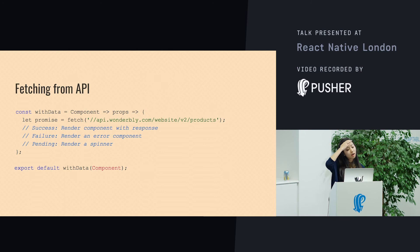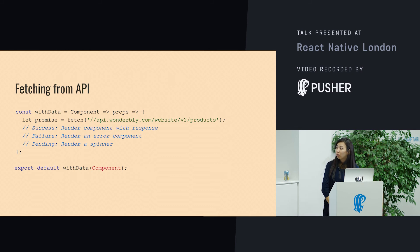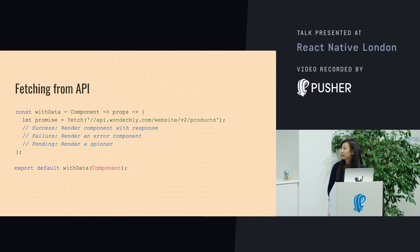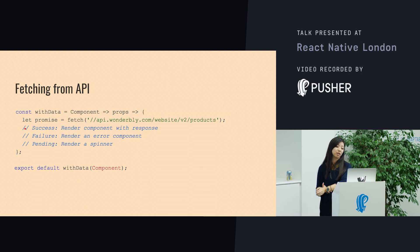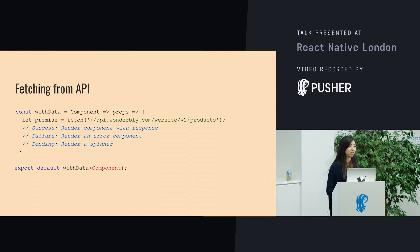You can use higher-order components to fetch from an API. This is technically not a pure function because it creates some side effects, but it might be useful. You can fetch from an API endpoint and render a certain component if it's successful. If it fails, you can render an error message. If it's pending, you can render a loading spinner.